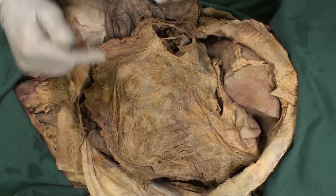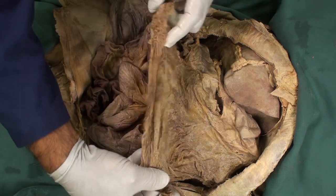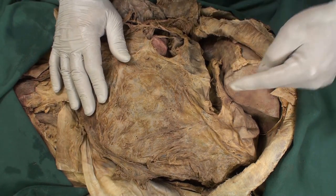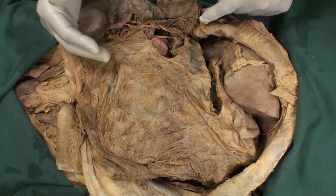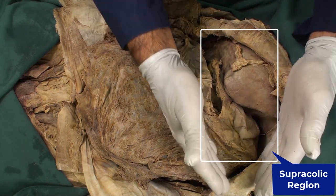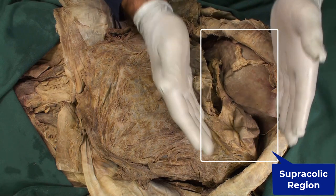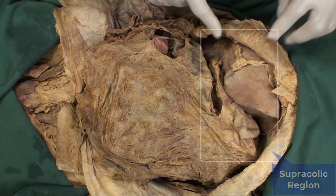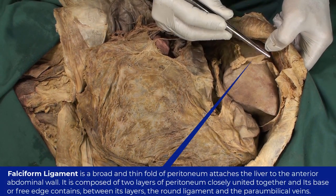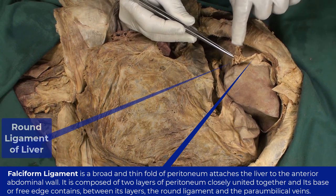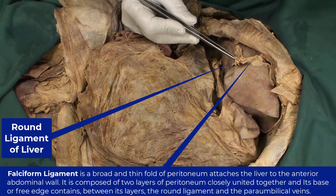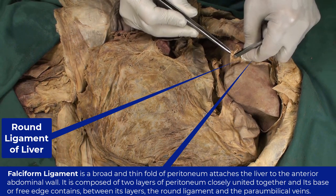In order to explore the abdominal cavity, we find the greater omentum and pull it down. We are looking at the area usually named as the supracolic region, which is above the transverse colon — the area where we have the foregut organs. In this area, we can see the falciform ligament, which we had to detach from the anterior abdominal wall, and the round ligament of the liver, or ligamentum teres hepatis, which is the obliterated umbilical vein.